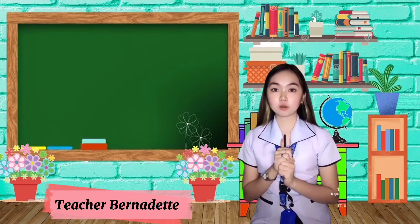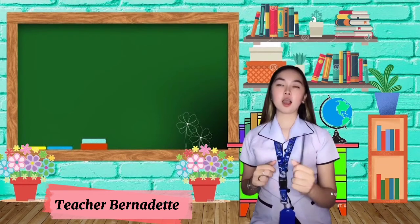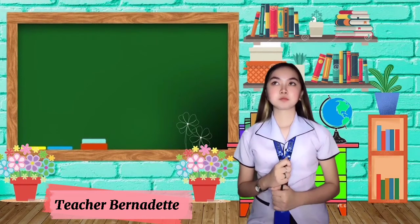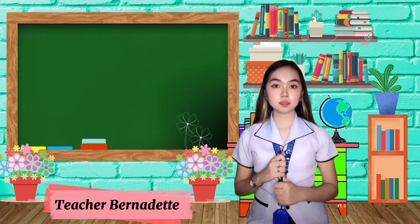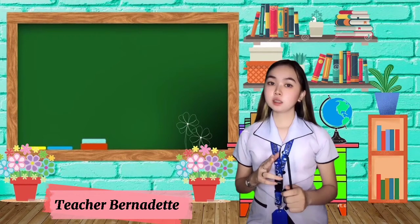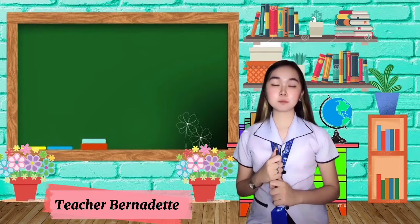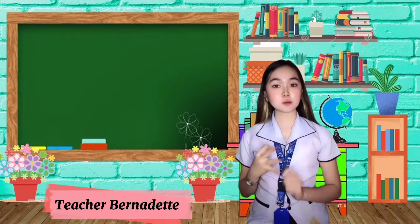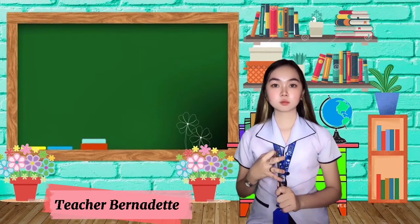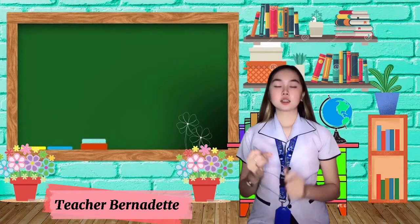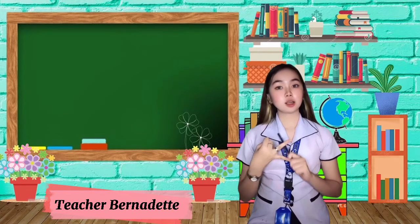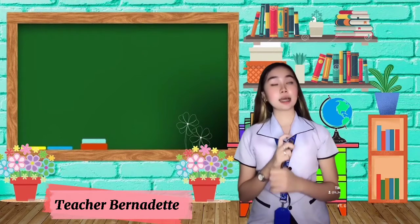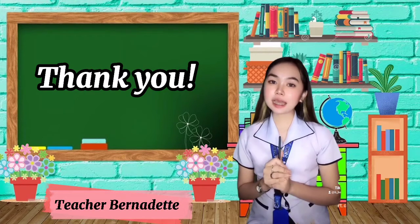Do you have any questions about our lesson today about the types of symmetry? Let's give yourself a round of applause. Very good, children. What was our topic again for today? About types of symmetry. What are the three types of symmetry we discussed? The translation symmetry, the rotational symmetry, and the reflexive symmetry. Very good, children. That's all for today. Thank you and God bless.